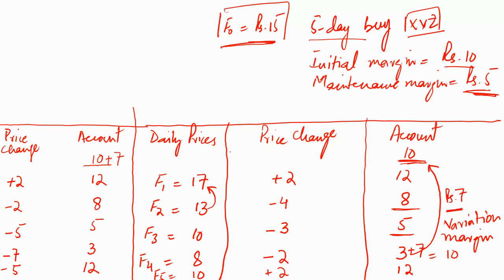The rest of the rules remain the same even for the seller — the initial margin requirement of 10 rupees and the maintenance margin requirement of 5 rupees still apply. Depending on the daily price changes, adjustments including margin calls and variation margins are made accordingly. It is not necessary that both parties get a margin call on the same day — it all depends on the daily price changes. That's it for this session; if this video helped you please like it and subscribe to the channel Simply Finance. Thank you very much.